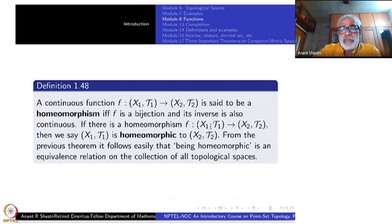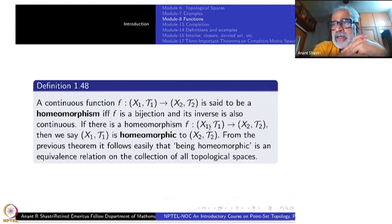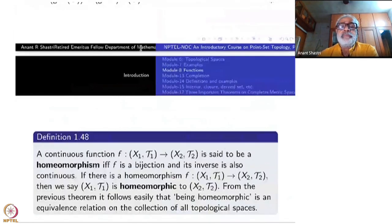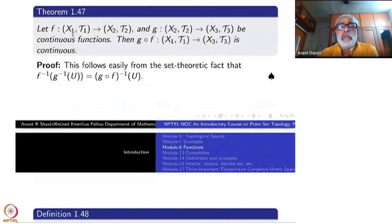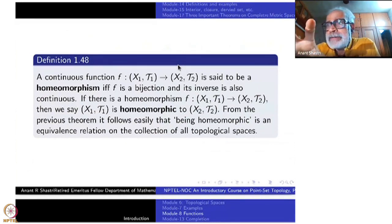Being homeomorphic is an equivalence relation on the collection of all topological spaces. Symmetry: the inverse of a homeomorphism is also a homeomorphism, since f⁻¹ is a bijection and continuous, and (f⁻¹)⁻¹ = f is continuous. Reflexivity: the identity map is always continuous and bijective, so any space is homeomorphic to itself. Transitivity: the composite of two homeomorphisms is again a homeomorphism, by the theorem on composites of continuous functions.